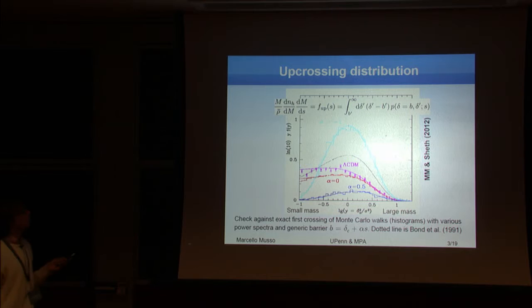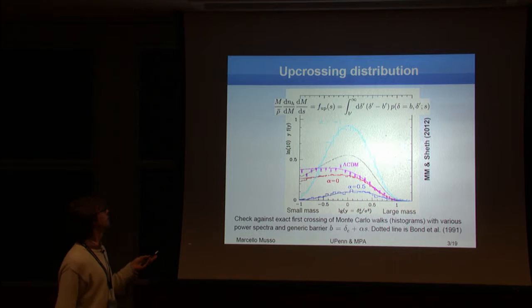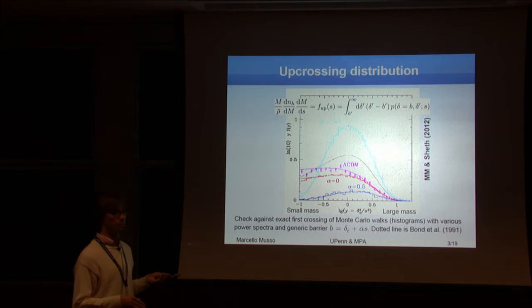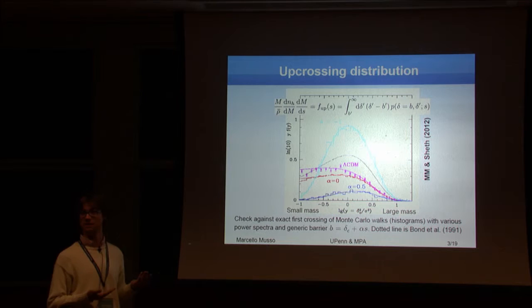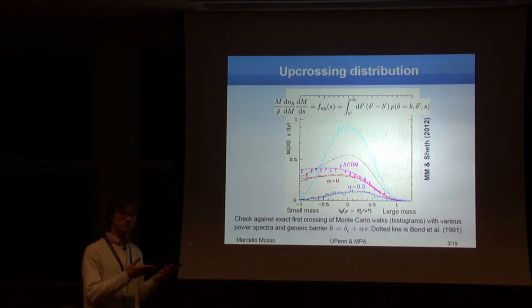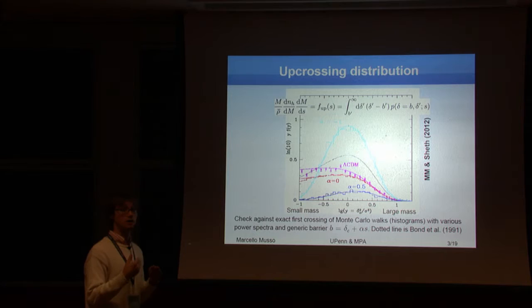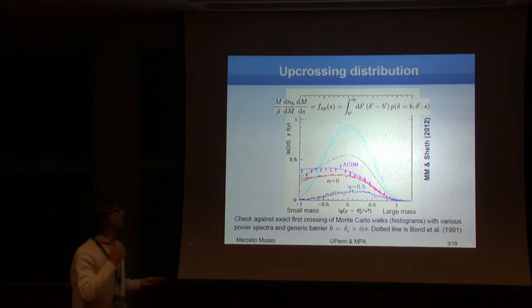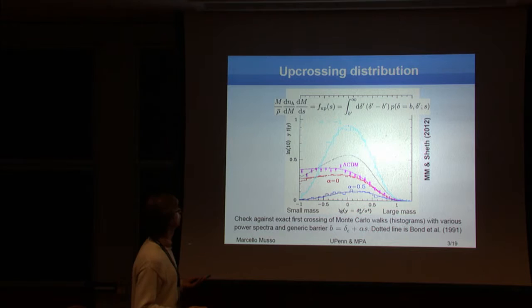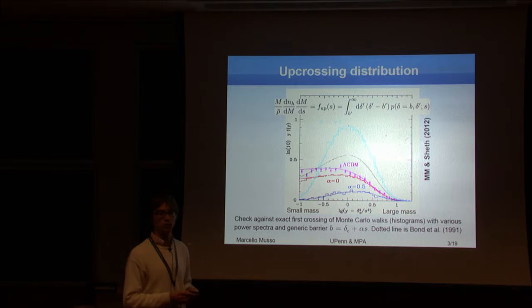The walks that I brought here are very jagged, but the walks that you deal with in cosmological problems are actually quite smooth. This makes the computation of the first crossing distribution harder, because technically speaking, the process is not Markovian anymore. If you manage to compute this first crossing probability, then you're in business because then you have something that maps into the mass function of halos.